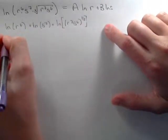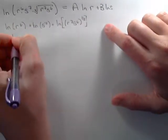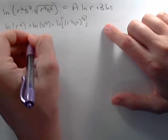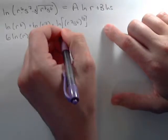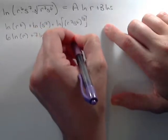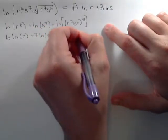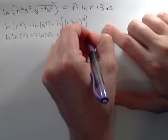Exponents can be brought out in front. So this is 6 natural log of r plus 7 natural log of s plus 1 third natural log of r to the 7th, s to the 6th.